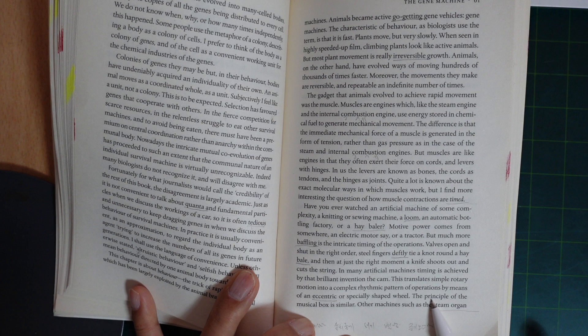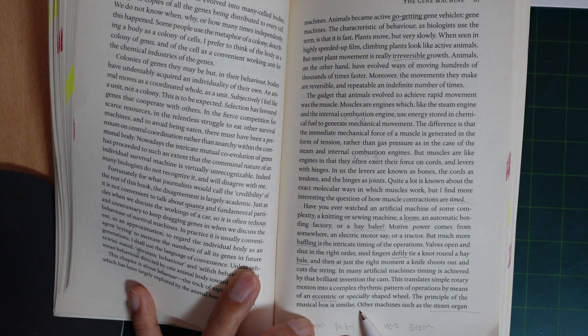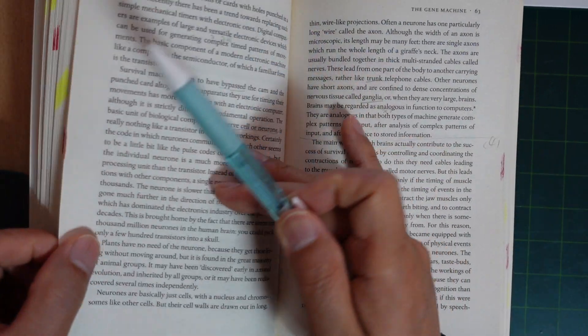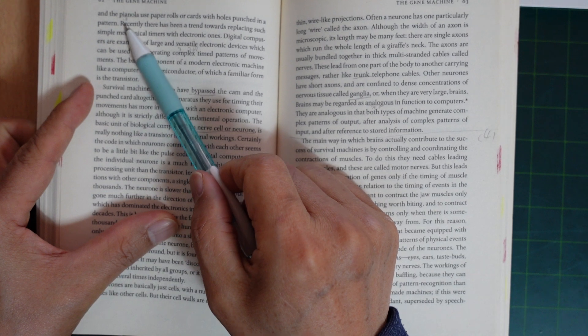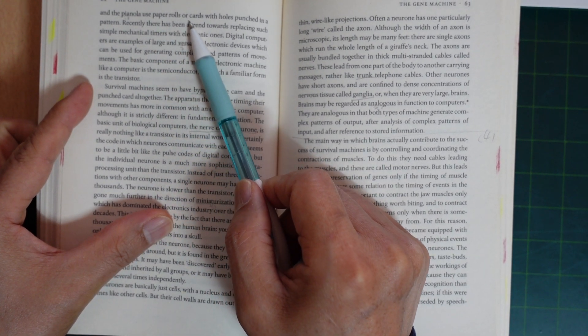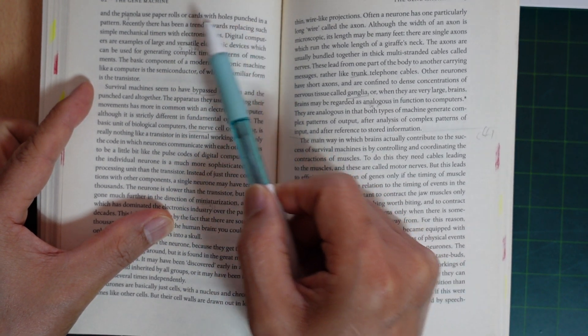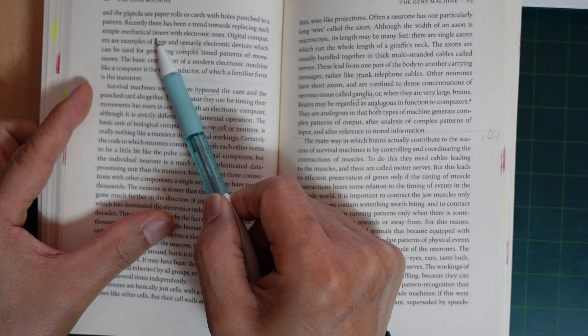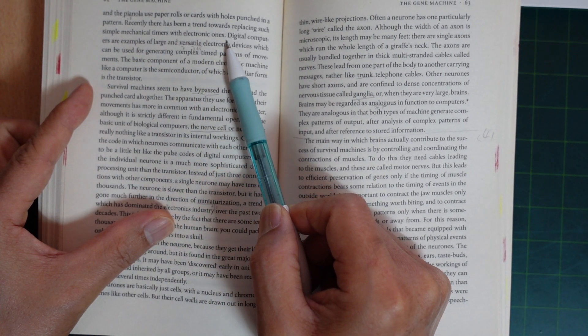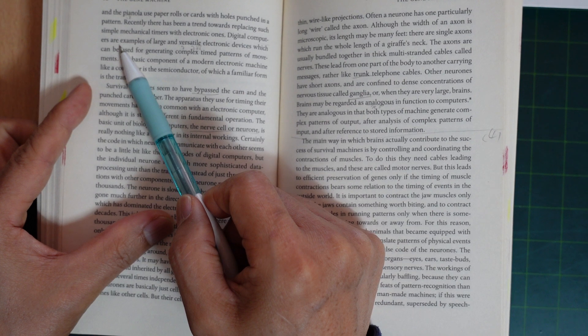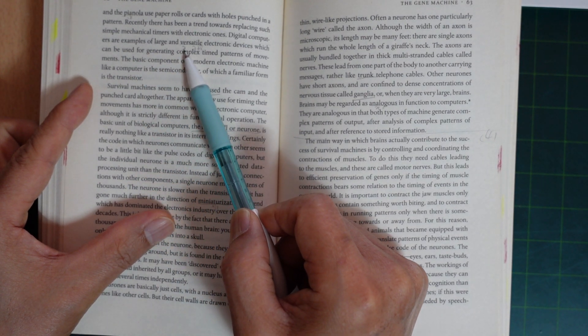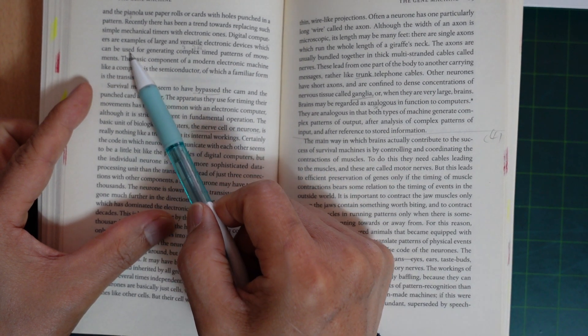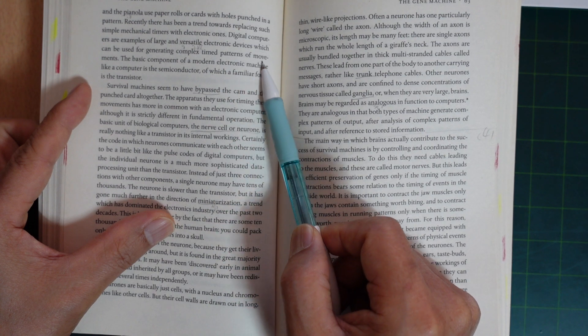The principle of the music box is similar. Other machines, such as the steam organ and pianola, used paper rolls or cards with holes punched in a pattern. Recently, there has been a trend toward replacing such simple mechanical timers with electronic ones. Digital computers are examples of large and versatile electronic devices which can be used for generating complex timed patterns of movement.